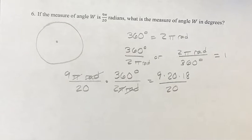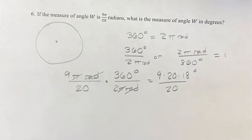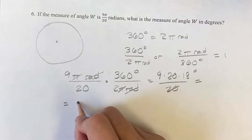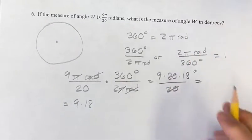That's divided by 20, and we keep the degrees. These 20s will cancel, and we're left with 9 times 18 degrees is the measure of angle W.